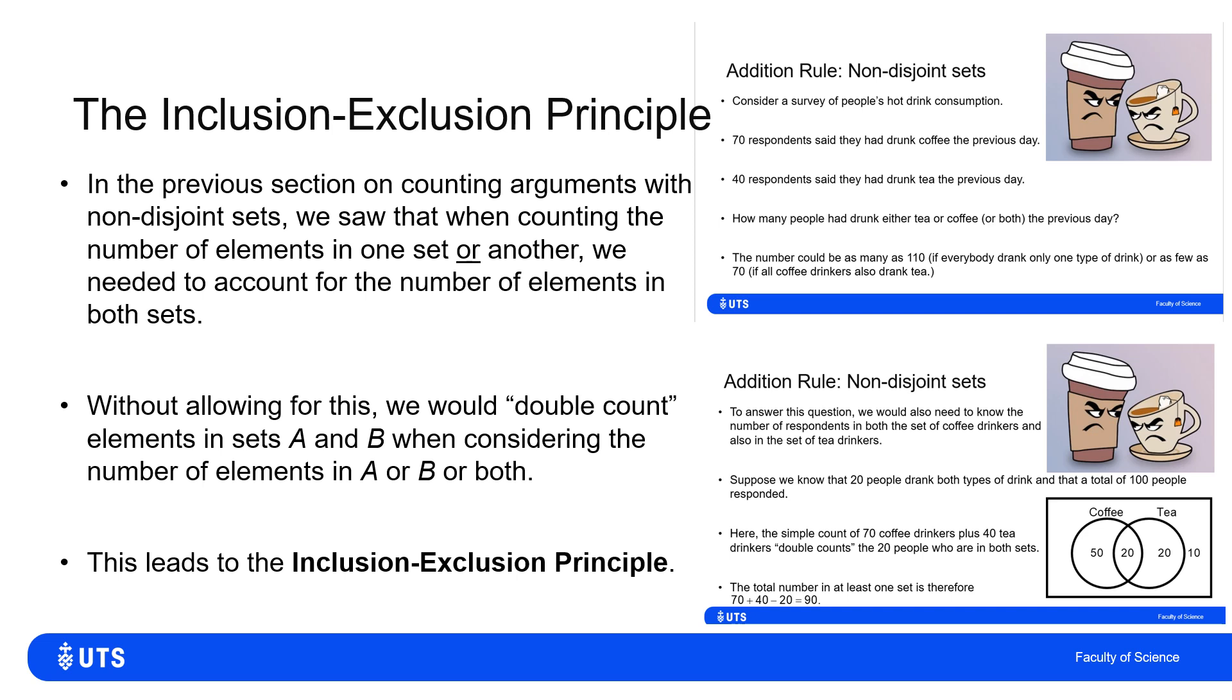And this idea is the inclusion-exclusion principle, where I would include everybody in every set they were in. But then I would go back and correct it by excluding once the people who've been double counted. Not removing them from the data set, they're still counted as in A and B, but then I remove the A and B's because I know they've been double counted.